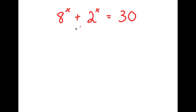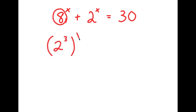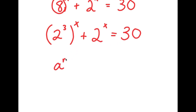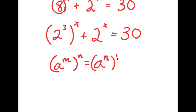In this problem, I have 8 to the power of x plus 2 to the power of x is equal to 30. I'm going to start by rewriting 8 as 2 to the power of 3. So now I have 2 to the power of 3 to the power of x plus 2 to the power of x is equal to 30.